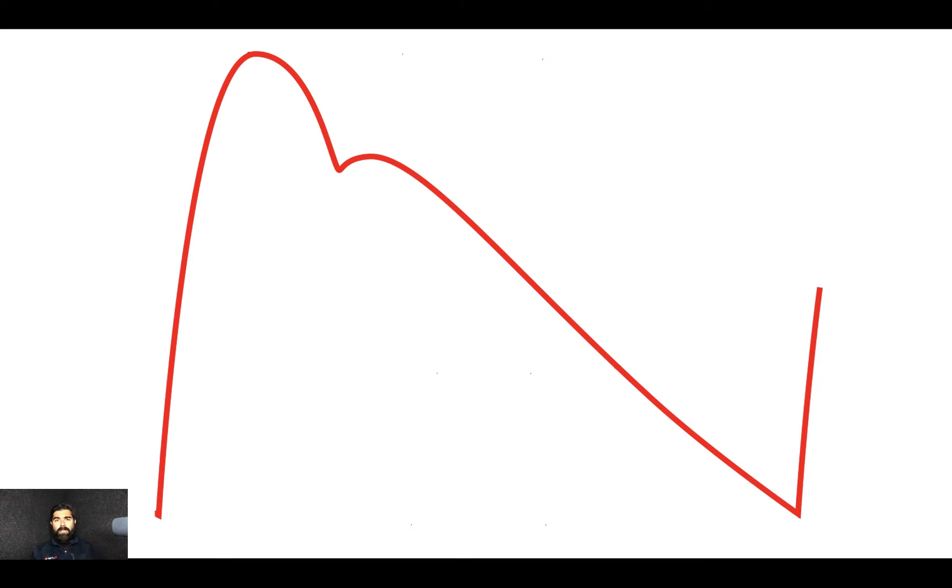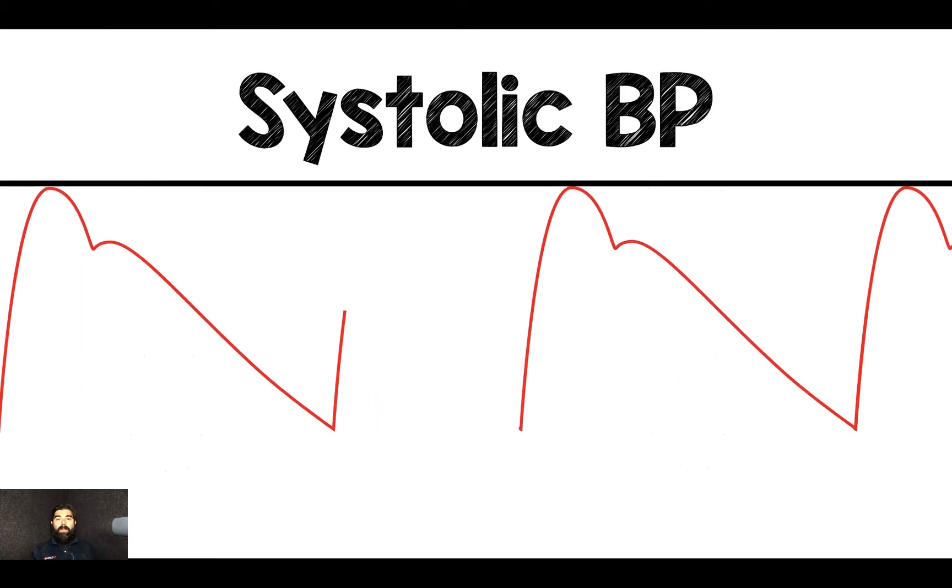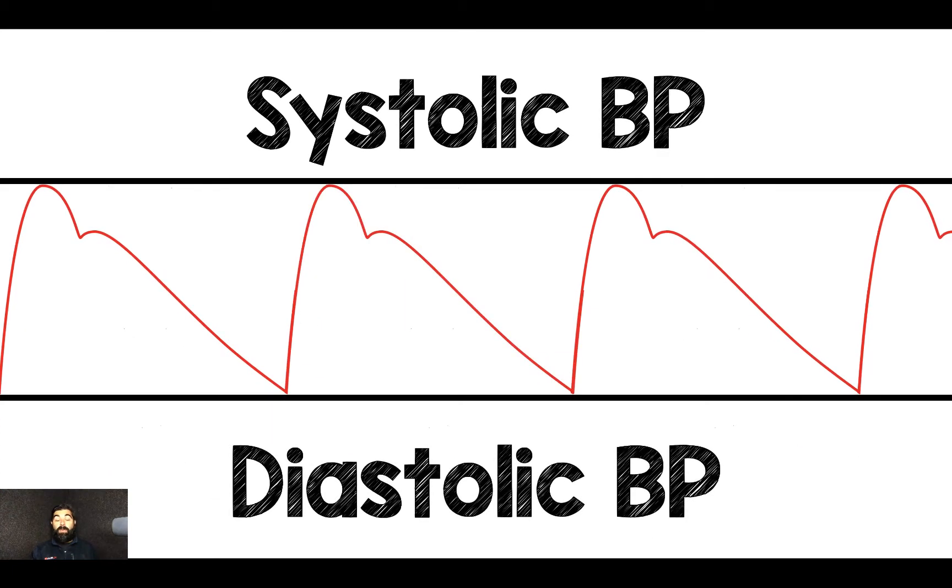So here's a typical waveform from an A-line. I think most of us recognize this, and the way the machine reads this is that the top of the waveform ends up being the systolic blood pressure and the bottom of the waveform ends up being the diastolic blood pressure.